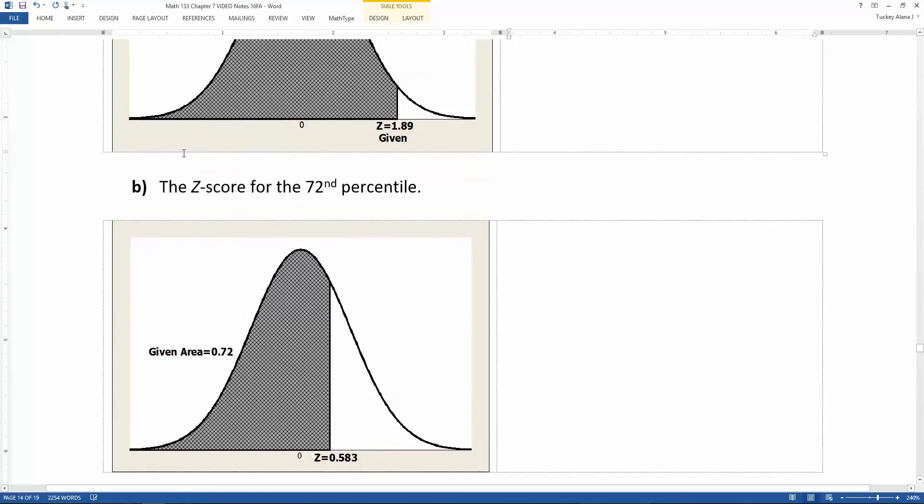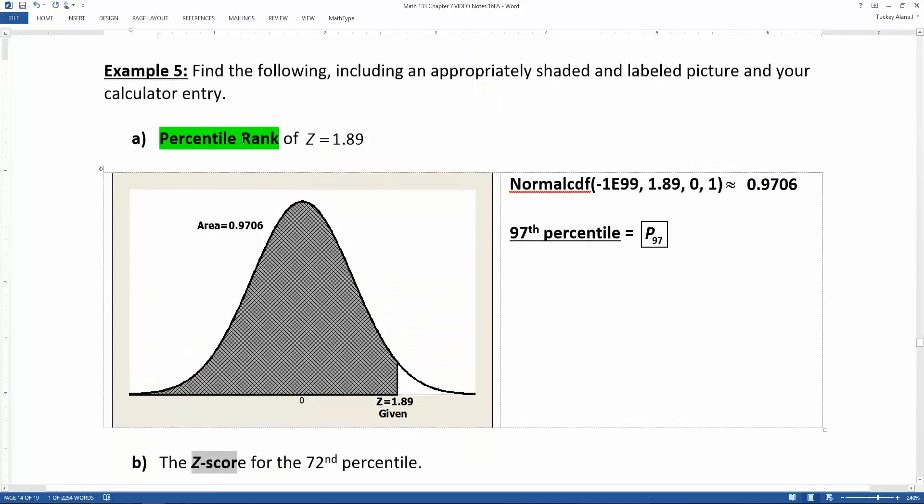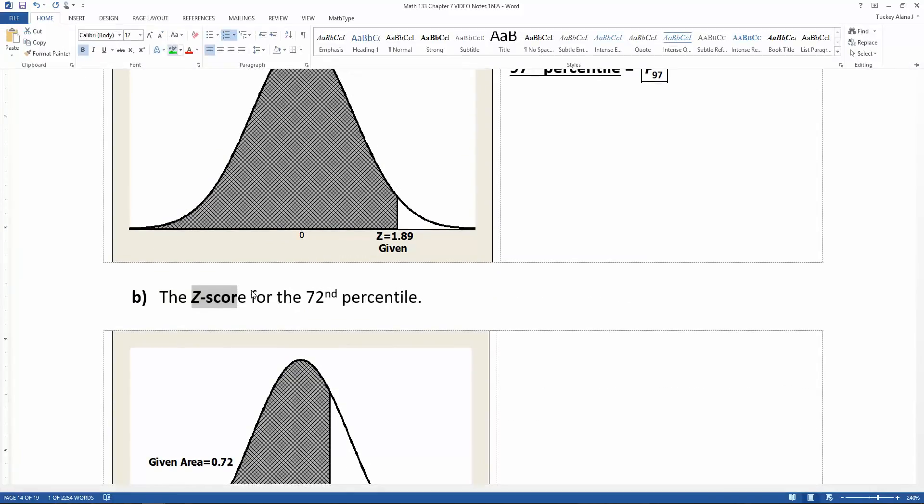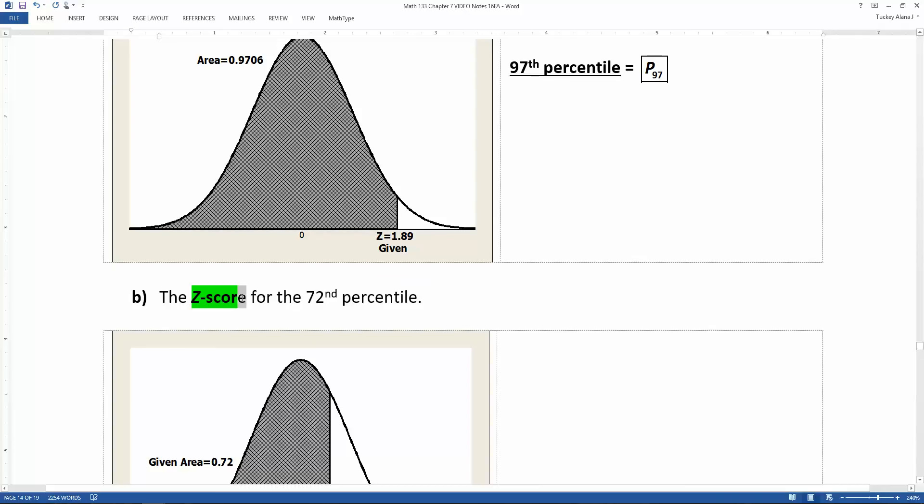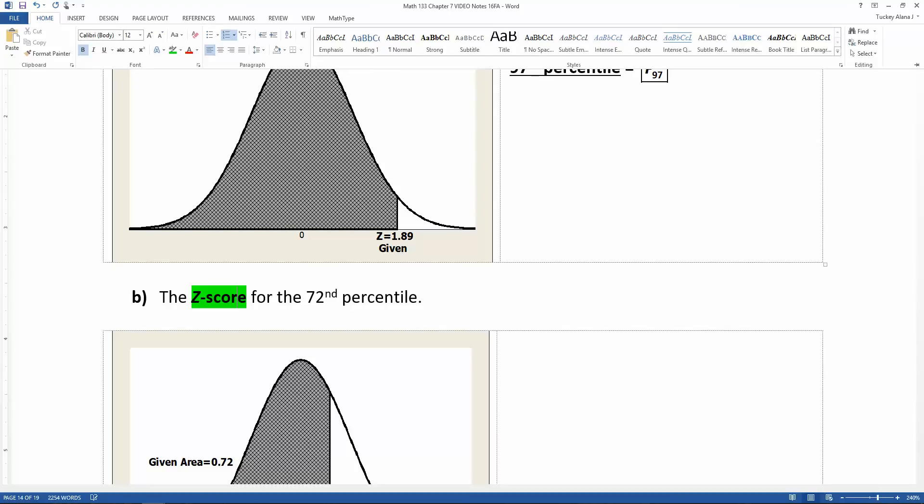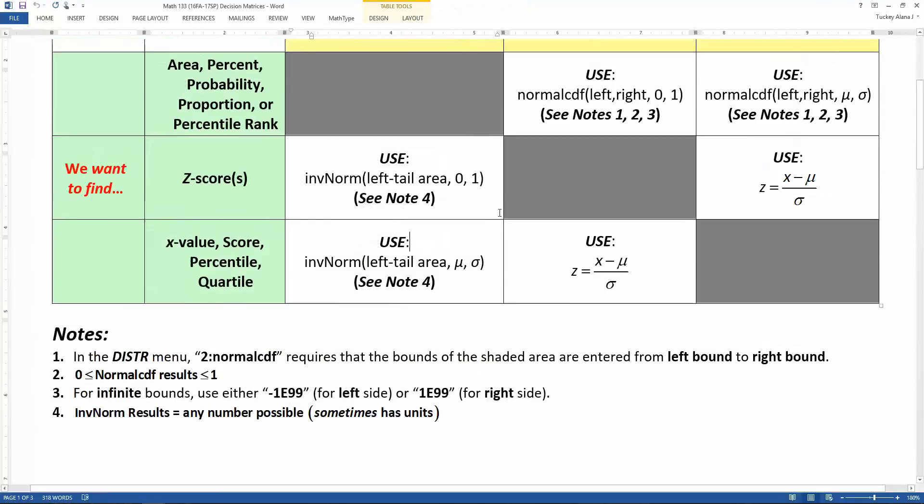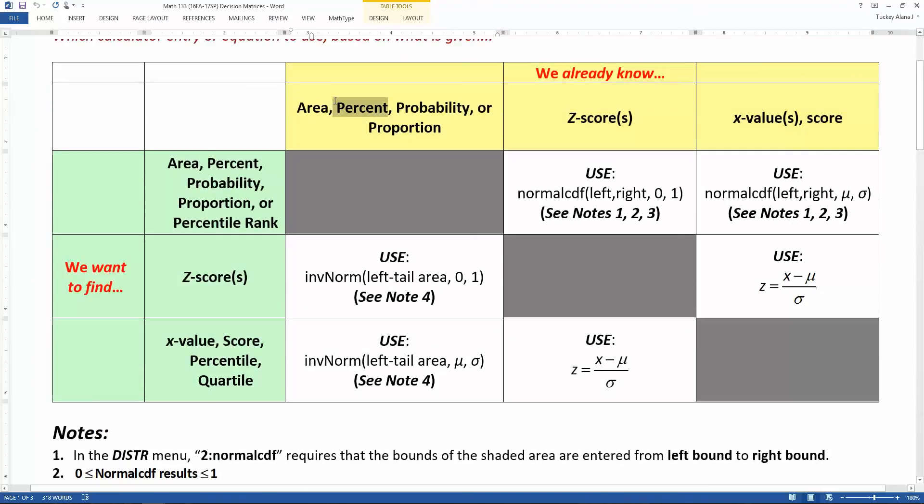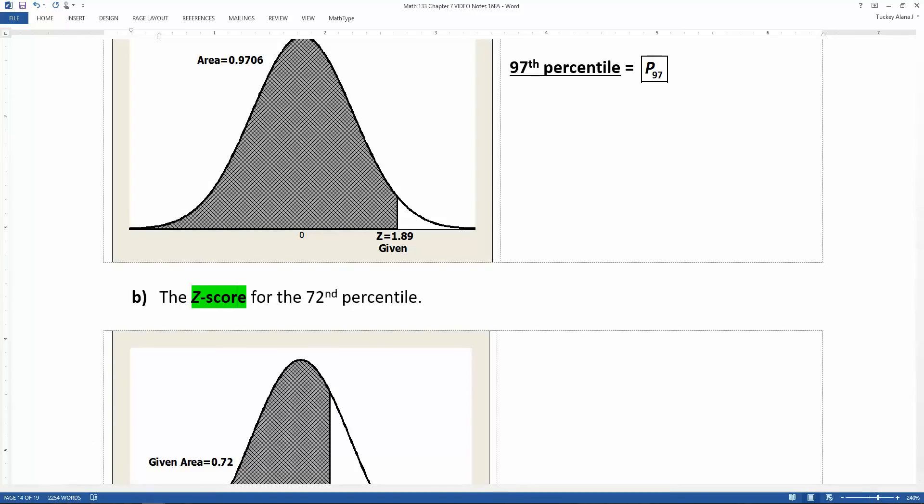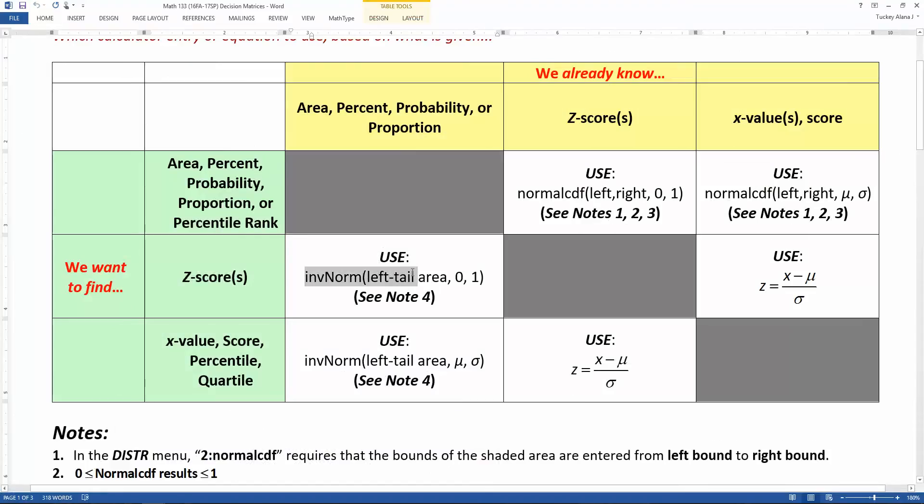Now, this one asks for the z score for the 72nd percentile. So I'm asking for the z score, and I'm giving you the 72nd percentile. Well, that 72nd is giving you a percentage. So I'm giving you a percent, and I'm asking for a z score. Let's go to the decision matrix. You know a percent, 72%, and you're looking for a percentile. That means you're going to use inverse norm, but we're looking for a z score. So we're actually using this special one, where we get to use inverse norm, left tail area, comma, 0, comma, 1.